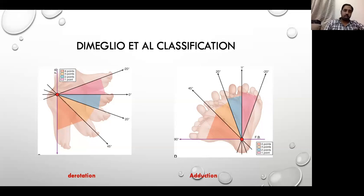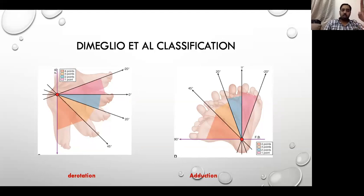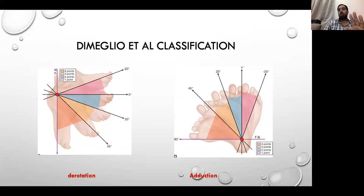The second classification system is the DiMeglio et al. classification, which measures four deformities: derotation, adduction, equinus, and varus. All four are graded from 1 to 4 based on severity. For rotation around the hindfoot and talus, 0 to 20 degrees gets one point, increasing with severity. For forefoot adduction, we draw a heel bisector line and measure the adduction in the maximally corrected position. Equinus deviation of the hindfoot is similarly graded.